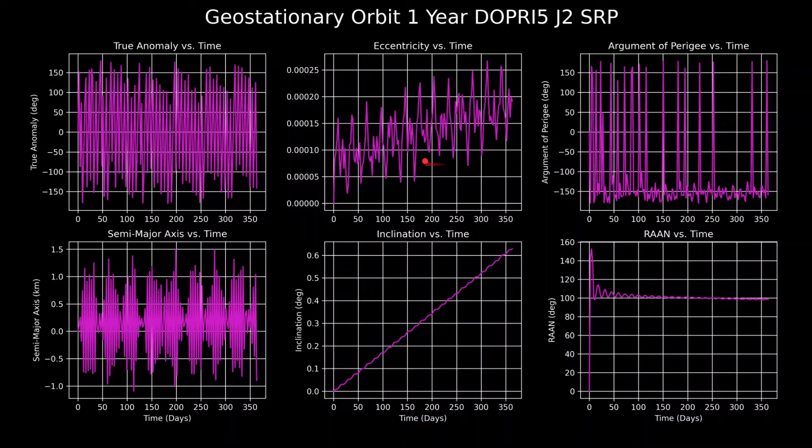This is what the Keplerian orbital elements look like for a geostationary orbit with the perturbations due to the Moon's gravitational pull, J2, and solar radiation pressure. But as I said before, these trends are mostly coming from the Moon, and the other two perturbations have very minimal effects for this time frame.